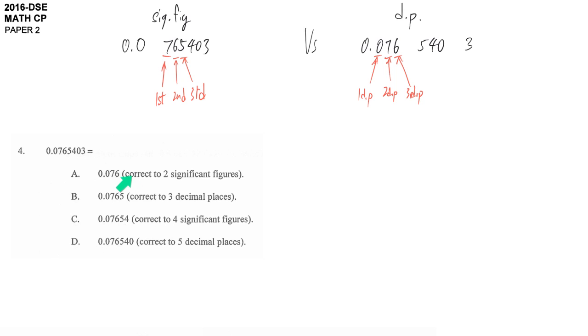Two significant figures. So we use this system, 7 and 6. We stop the digit here. And then we consider what at the back is more than half. So we should change it to 0.077, not 6 but one more. Because what's behind is more than half. So A is not our answer.